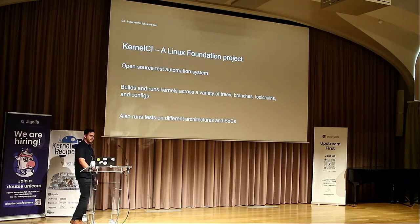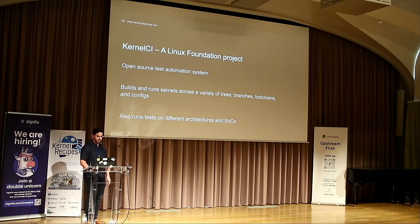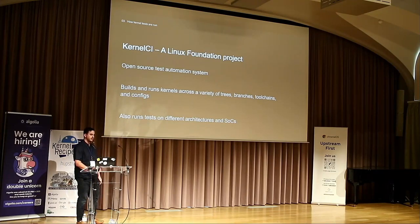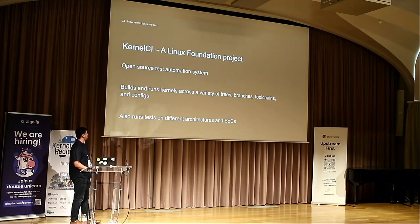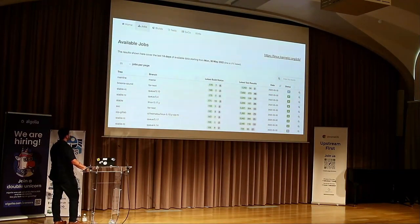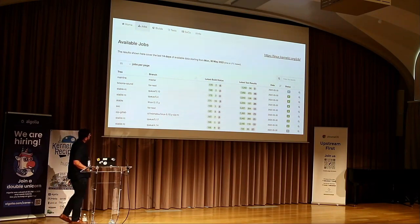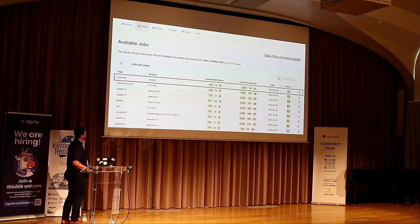It's a lot of cognitive load as a developer to know how to really have faith in your patch, especially if you're adding to core common code. A good CI framework has to take care of that and take the burden on for the developer. Here's an example of what KernelCI looks like in the web UI — it shows all the jobs run for various trees and branches, which builds are passing, which are skipped, which are failing, and same for the tests. There's a lot of information here.